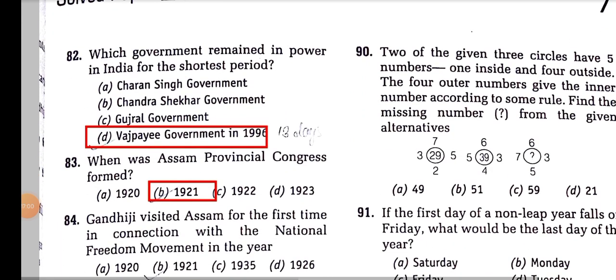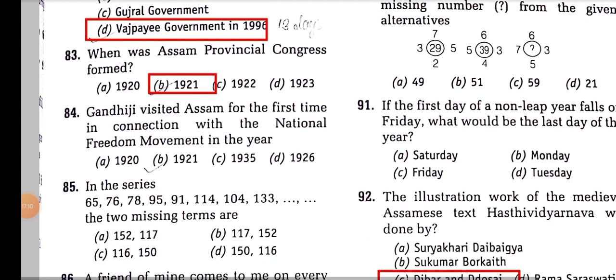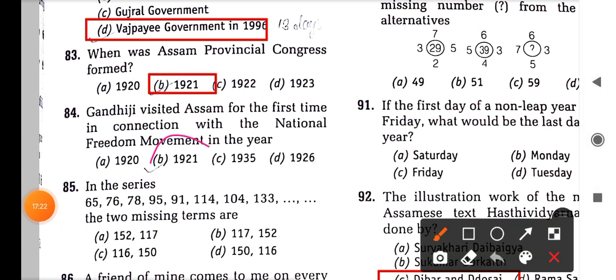Which government remained in power in India for the shortest period? It was the Vajpayee government in 1996, which lasted only 13 days. Assam Provincial Congress was formed in 1921. Gandhiji visited Assam for the first time in connection with the National Freedom Movement in the year 1921.